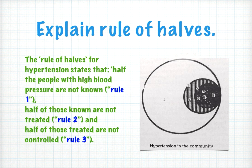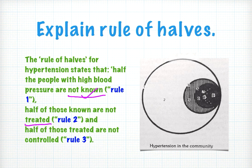Next: explain the rule of halves. The rule of halves states that of all people with high blood pressure, only half know they have it. Of those who know, only half are treated. And of those who are treated, only half are effectively controlled.